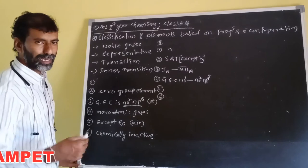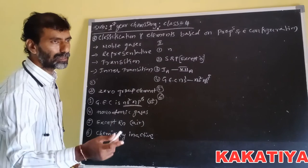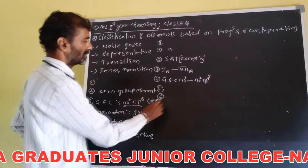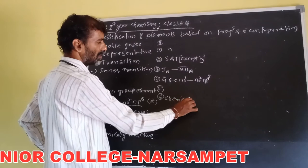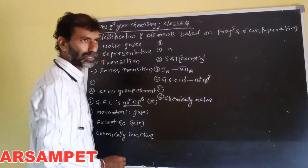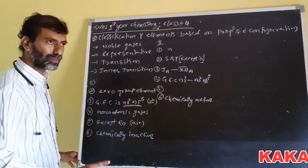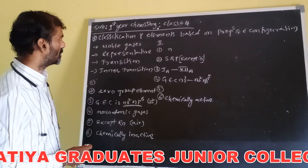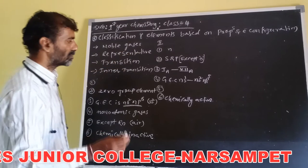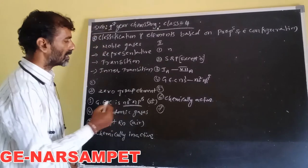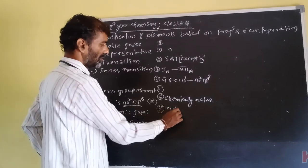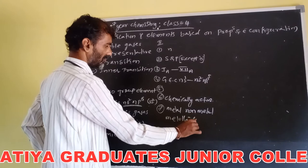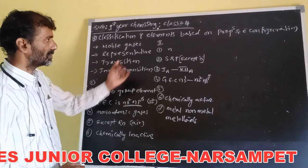These elements tend toward the nearest inert gas configuration by losing, sharing, or gaining electrons. Hence, representative elements are chemically active due to loss, gain, or sharing of electrons. This type includes metals, non-metals, and metalloids.